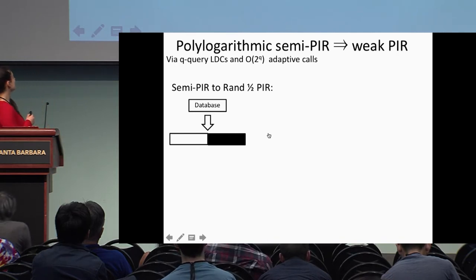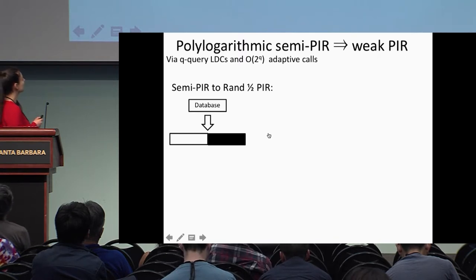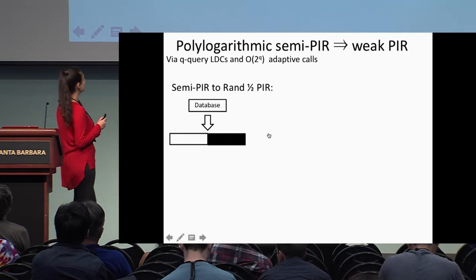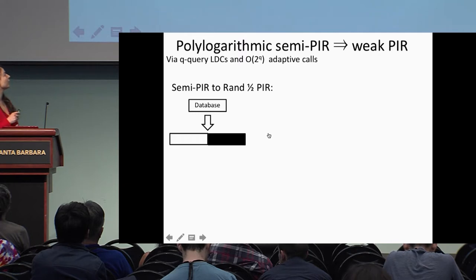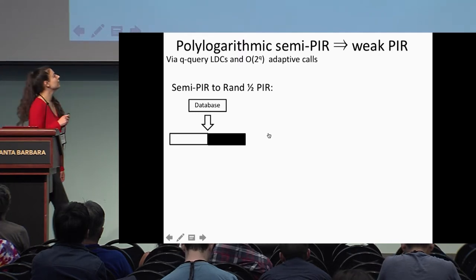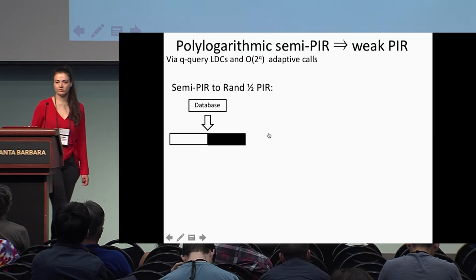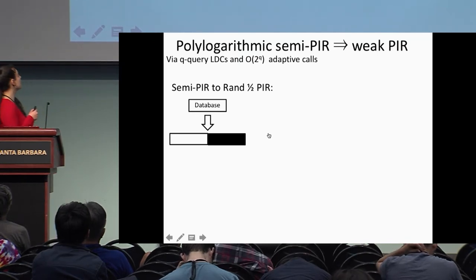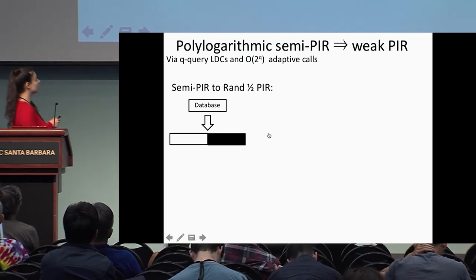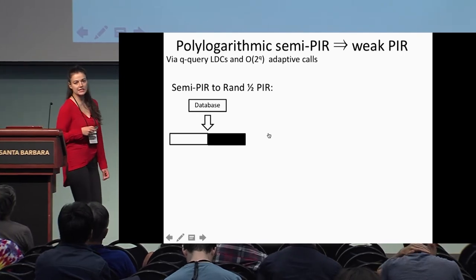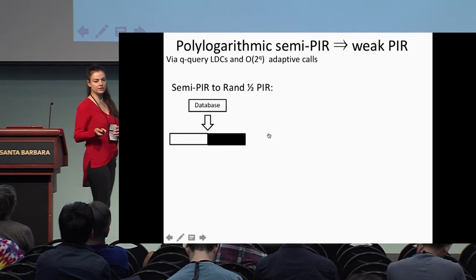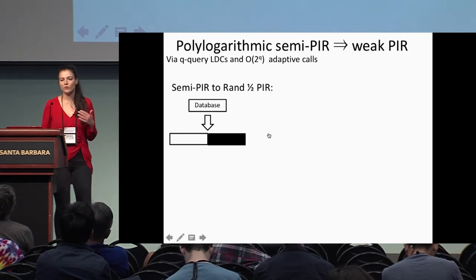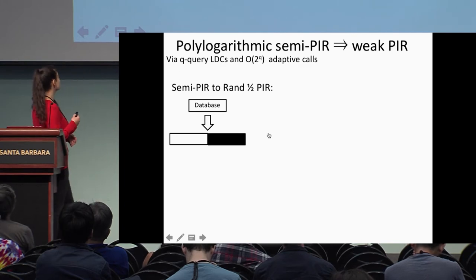For the rest of the talk, I'll show how to construct slightly sublinear PIR from polylogarithmic semi-PIR. We use q-query locally decodable codes and make 2^q adaptive calls to semi-PIR. As a first step, I reduce semi-PIR to what we call RAND half-PIR: a probabilistic PIR where the server learns the index with probability one half.